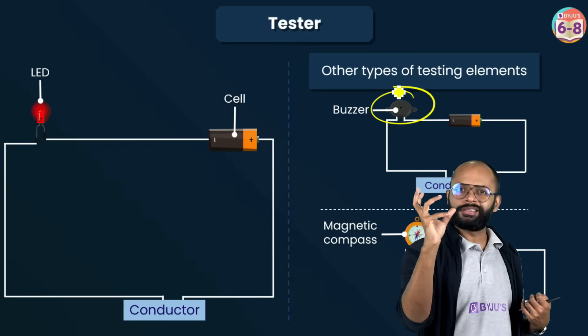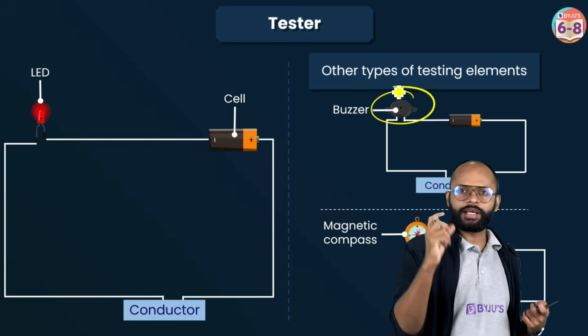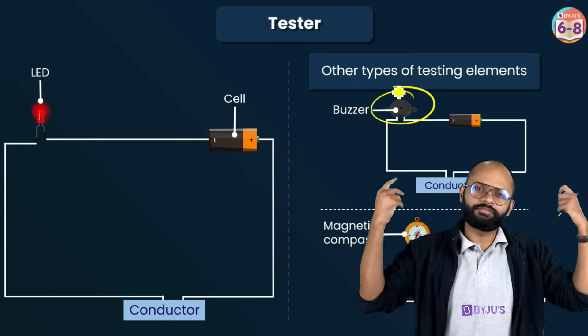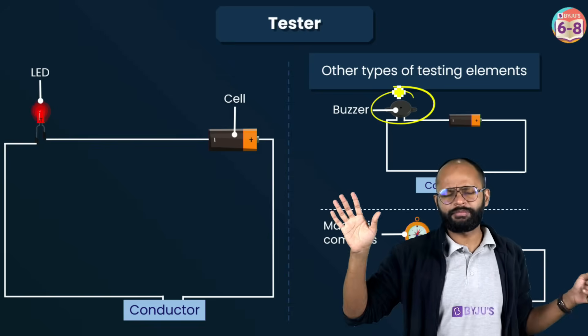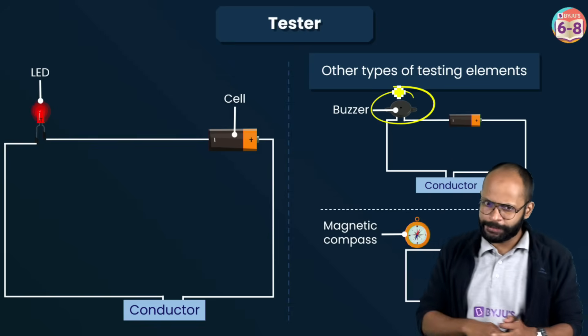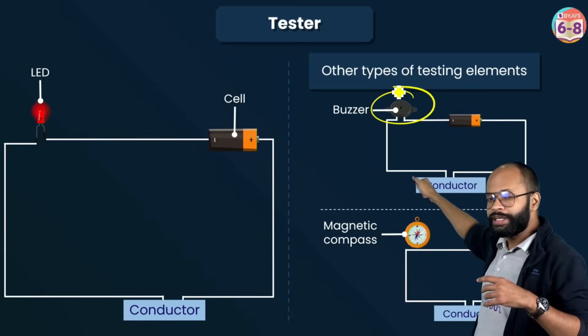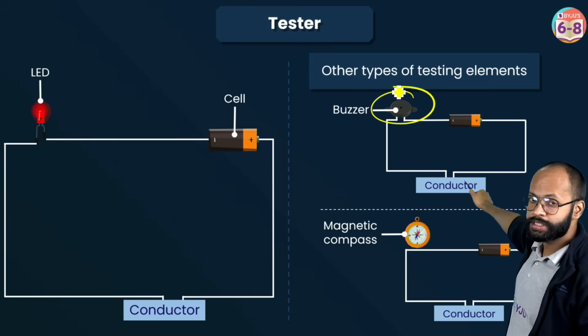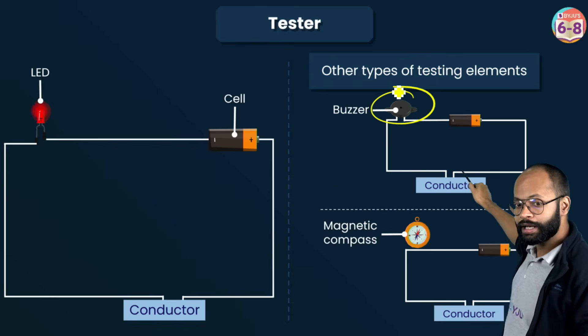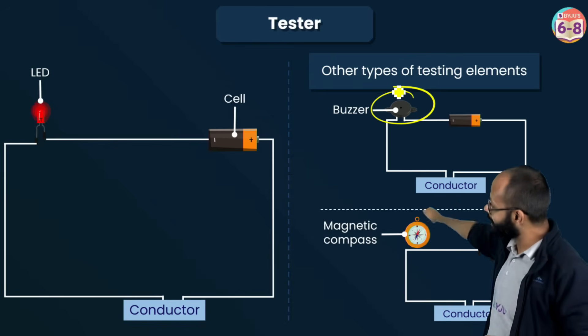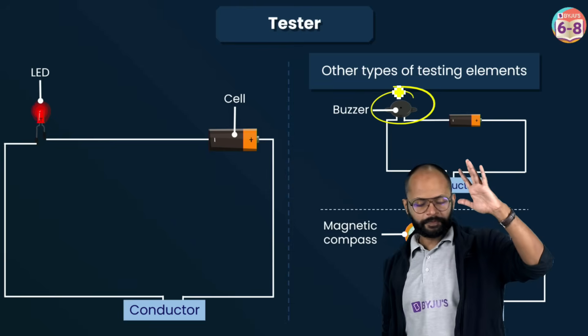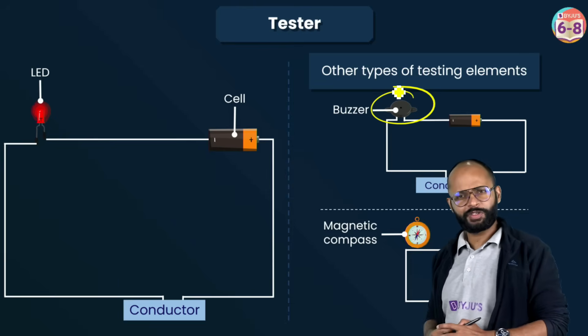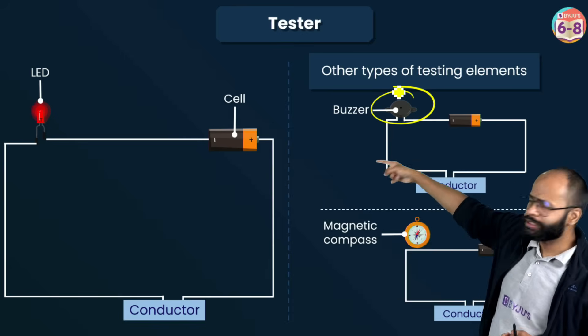Either you can see something or you can hear something. That's why this buzzer is there. There is one more way. This is also a tester which works on sound. If the current is flowing, this buzzer will buzz. This buzzer will create a sound. Whatever the sound is, doesn't matter. But important thing is, this is also indication for you that current is passing through this conductor.